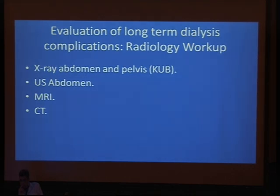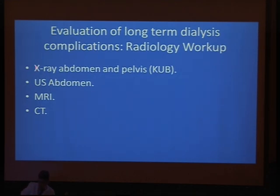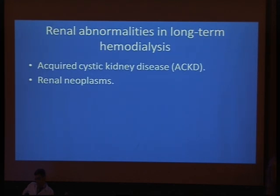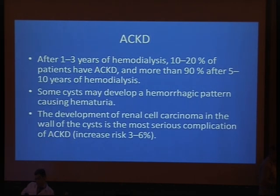What about evaluation of patients with long-term hemodialysis? To evaluate complications in patients with long-term hemodialysis, we do ultrasound and plain X-ray as routine evaluation. We can also do MRI and CT if there is suspicion of malignancy or acquired cystic kidney disease in hemodialysis patients. The two main renal abnormalities are acquired cystic kidney disease and renal neoplasm.